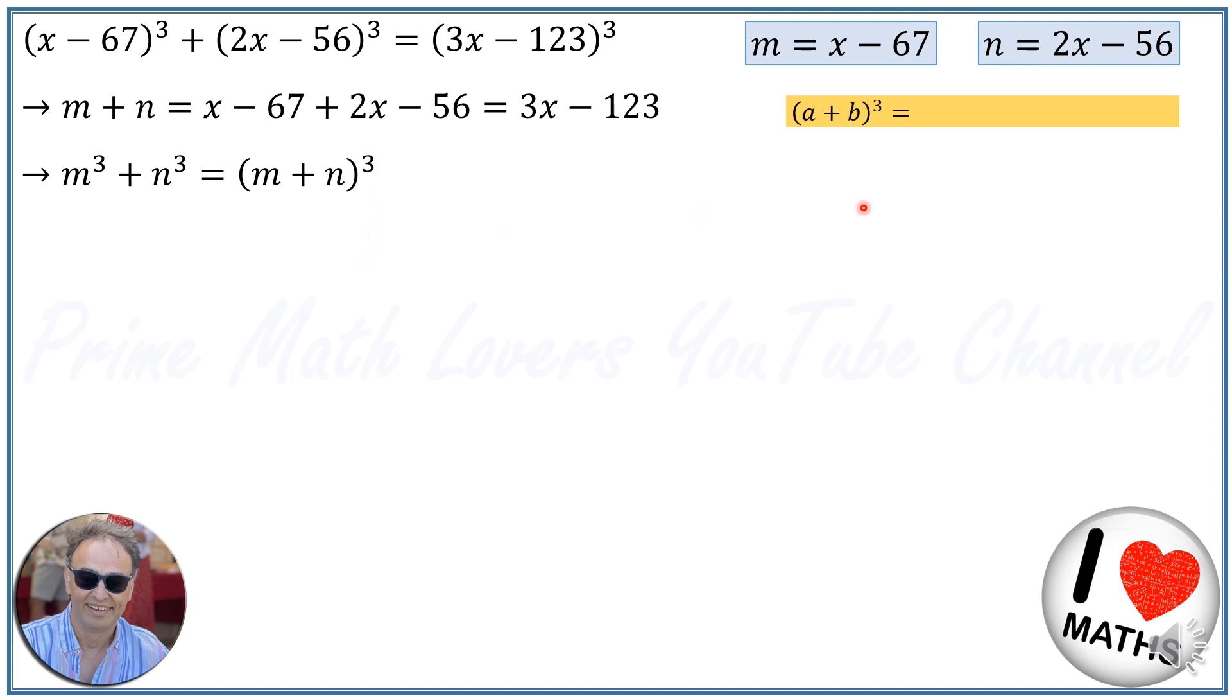We know from Newton, Huygens, Pascal binomial expansion that (a + b)³ is a³ plus 3a²b plus 3ab² plus b³. So I use this formula to expand the right-hand side of the equation.